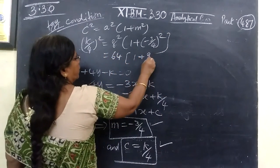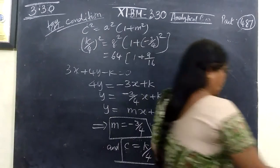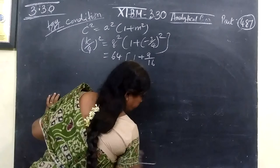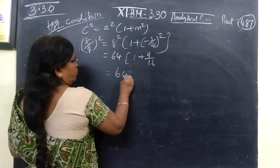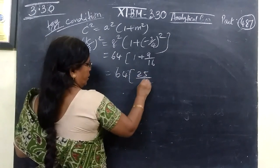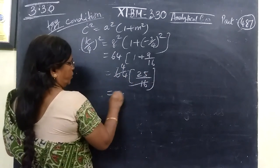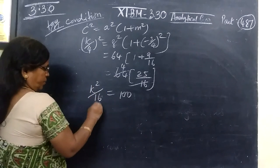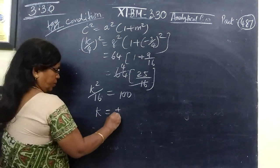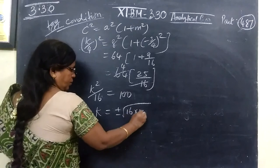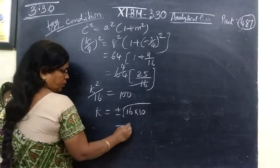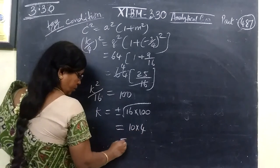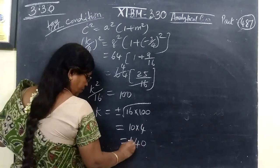Now cross multiplying: 64 into 25 by 16 equals 100. So k squared by 16 equal to 100, therefore k equal to plus or minus root of 16 into 10 — that is 4 times 10 — equal to plus or minus 40.